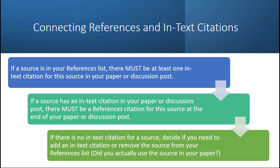And if there is no in-text citation for a source, decide if you need to add the in-text citation inside your paper or discussion post, or do you need to remove the source from your reference list. The real question to ask here is: did you actually use the source in your paper or discussion post? If not, get rid of it.